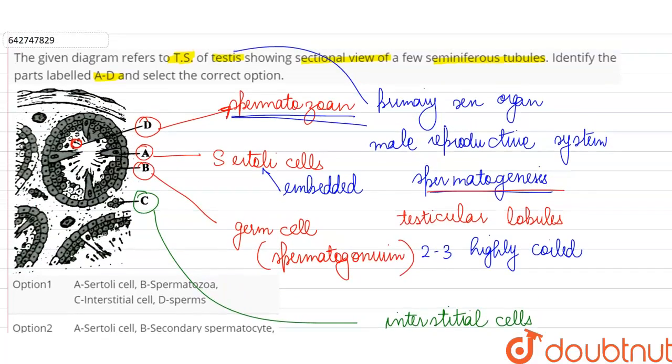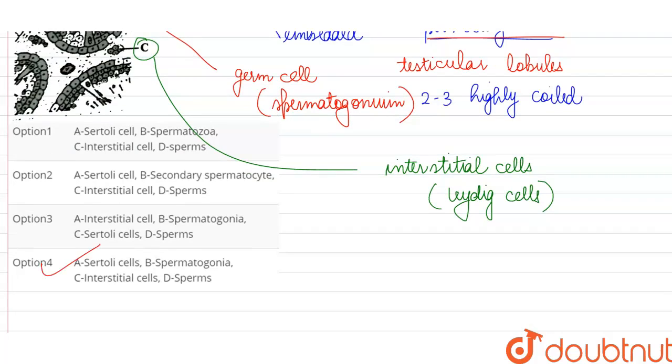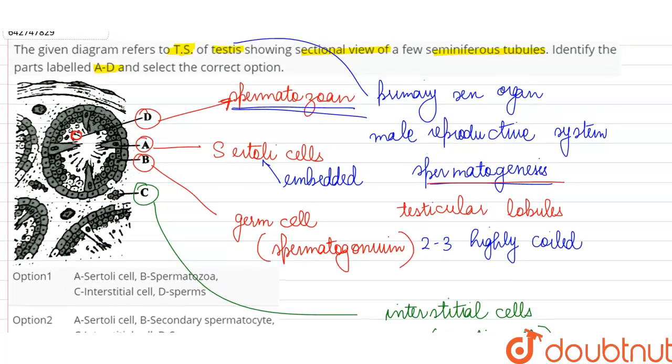So over here from among the given options, we are going to select our correct answer option D because A are the Sertoli cells inside our seminiferous tubule, B is a spermatogonium which is not yet fully differentiated. It is going to undergo spermatogenesis process to develop into a spermatozoa. Part D is our mature spermatozoa.